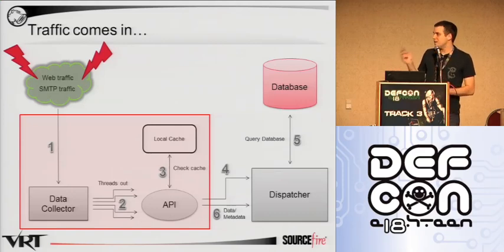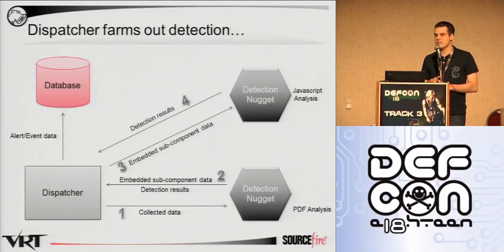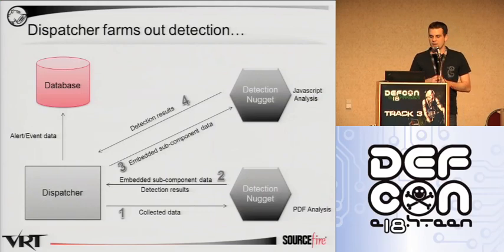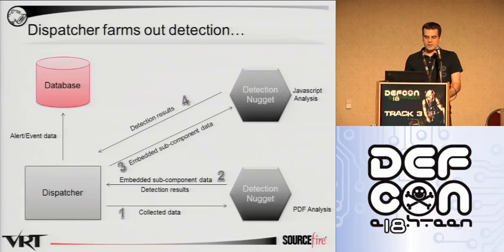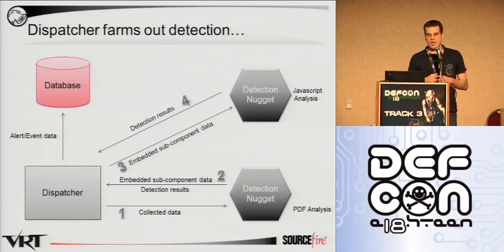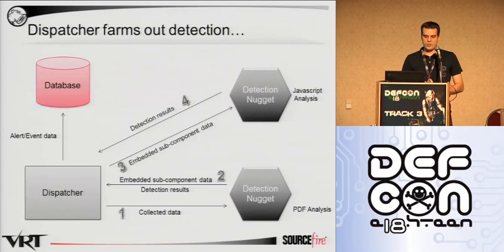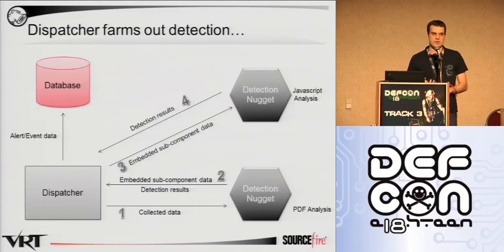So the dispatcher ships off the data to the detection nuggets, and the detection nuggets will perform their analysis and give feedback in the form of alert data or detection results. In this case we've got a PDF nugget, and in that PDF that it's analyzing, there is a subcomponent of JavaScript. Now the PDF nugget does not have to be aware of how to parse out that JavaScript — it can effectively take that component, ship it off to the dispatcher, re-enter it into the system, and that data then gets shipped off to another nugget which is capable of handling that type of data. In this fashion we can break complex file formats down into smaller and smaller parts and address the problem in simpler and simpler ways. All of the detection results from both the subcomponent and the PDF nugget are coordinated via an event ID, and all that information is stored in our database for later access.